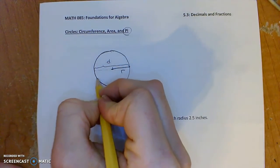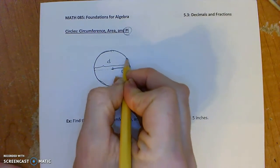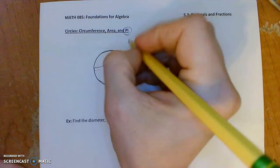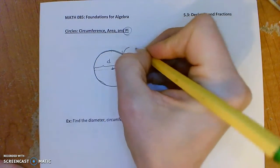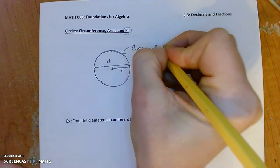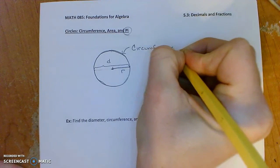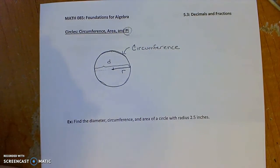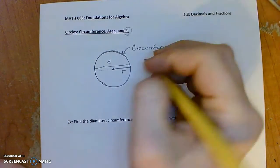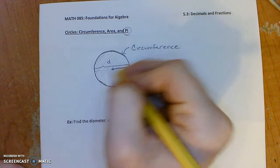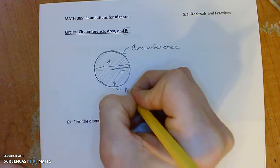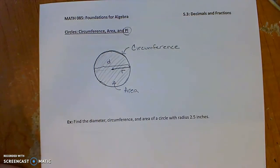And the distance around the circle, usually for polygons the distance around our objects is called the perimeter, so think of circumference almost like perimeter but specifically for a circle. And then area will be the space inside. Area is the space taken up inside the circle.